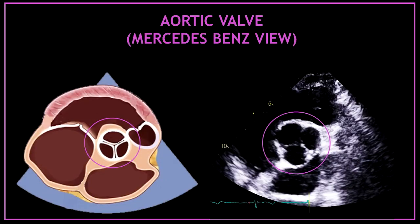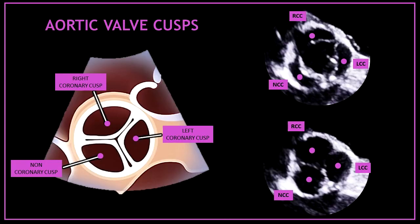This valve in the middle of this view is the aortic valve. When the aortic valve is closed it looks very similar to the Mercedes-Benz symbol, that's why this view is often called the Mercedes-Benz view. In this view we can differentiate all three aortic valve cusps: on the top you have the right coronary cusp, on your right hand side you have the left coronary cusp, and on your left hand side you have the non-coronary cusp.